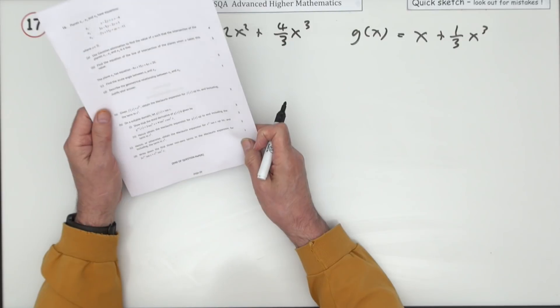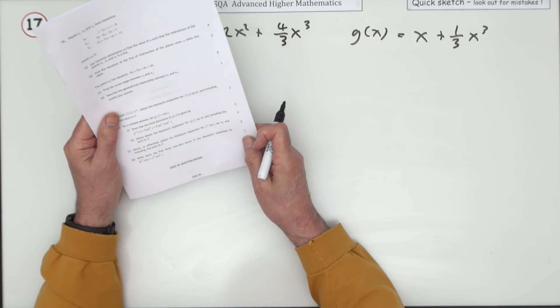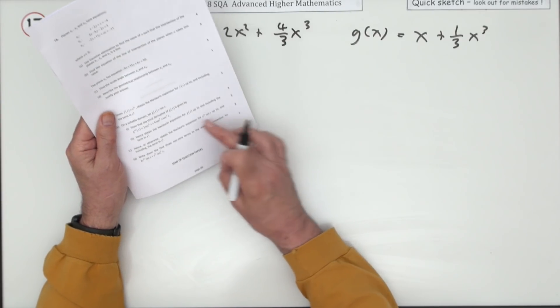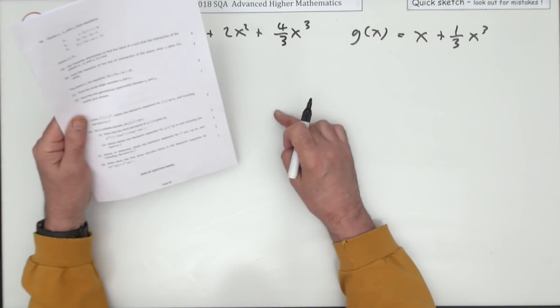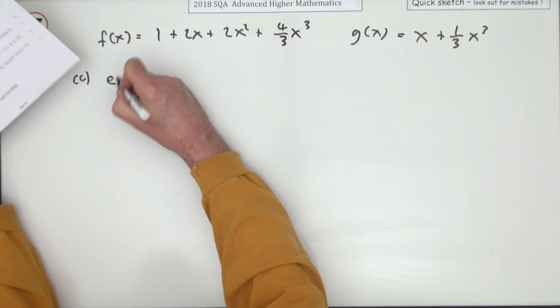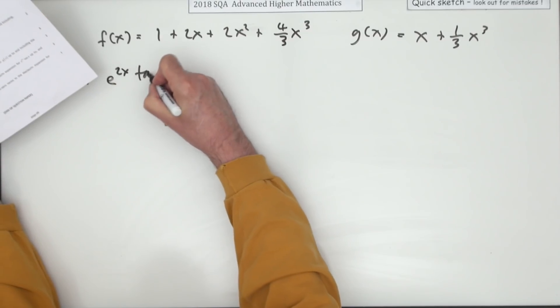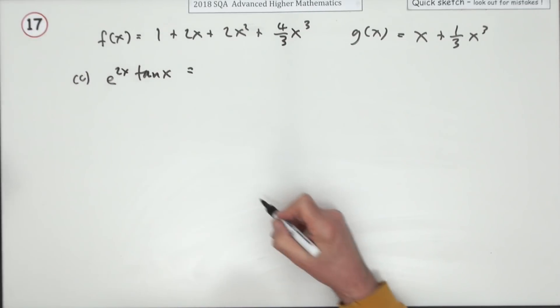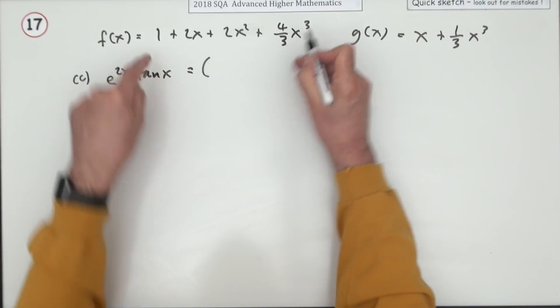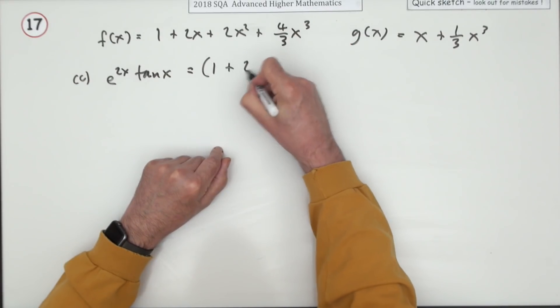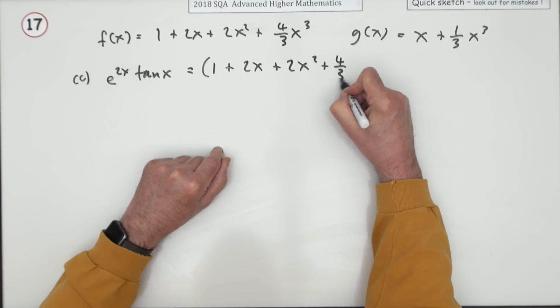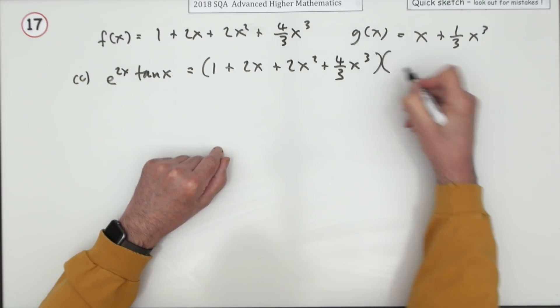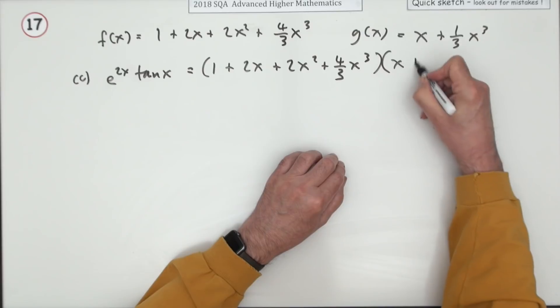So we've got to part c. Hence or otherwise obtain the Maclaurin expansion for the product of these two: e to the 2x tan x. That was the f of x times the g of x. And we'll just write it here. E to the 2x tan x would equal first three, four terms here, and times the tan x which was just these two terms.